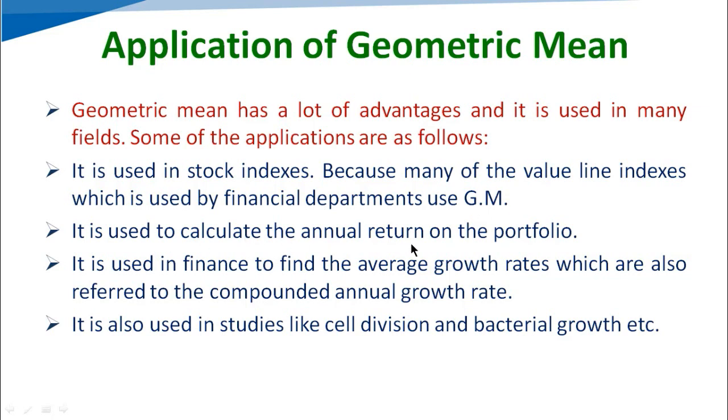It is used to calculate the annual return on the portfolio. If an investor has made a portfolio, then to calculate their annual return, geometric mean is used. It is used in finance to find the average growth rates, which are also referred to as the compounded annual growth rate. And it is also used in studies like cell division and bacterial growth.